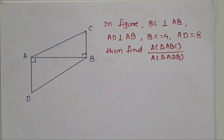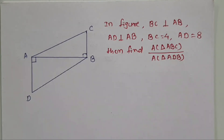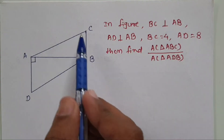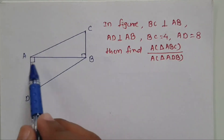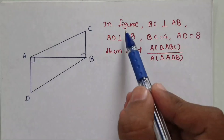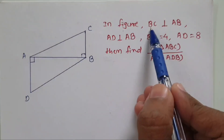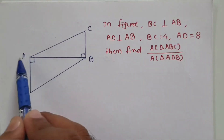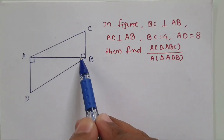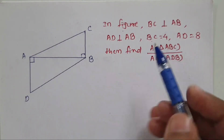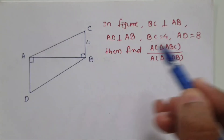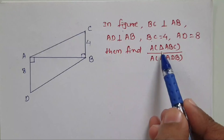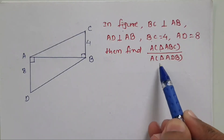The first question is given on the diagram. Here in the diagram there are two triangles: triangle ABC and triangle BAD. For this question, BC is perpendicular to AB which is given, and AD is also perpendicular to AB. The length of BC is given to be 4 units.